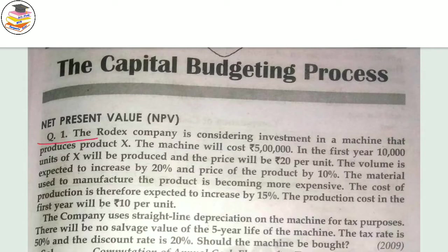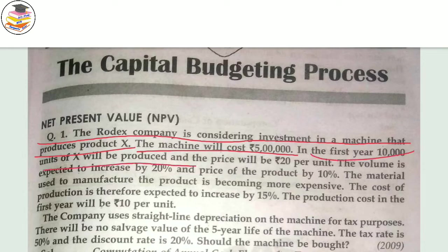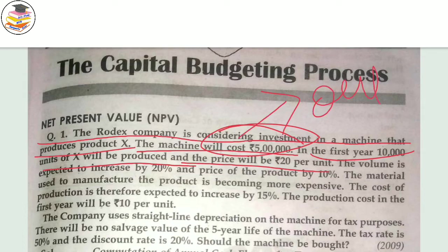The question is: Rodex Company is considering investment in a machine that produces Product X. They want to invest in a machine to produce Product X. The machine cost is rupees 5 lakh. In the first year, 10,000 units of Product X will be produced and the price will be 20 rupees per unit. So this machine investment of 5 lakh is your outflow.